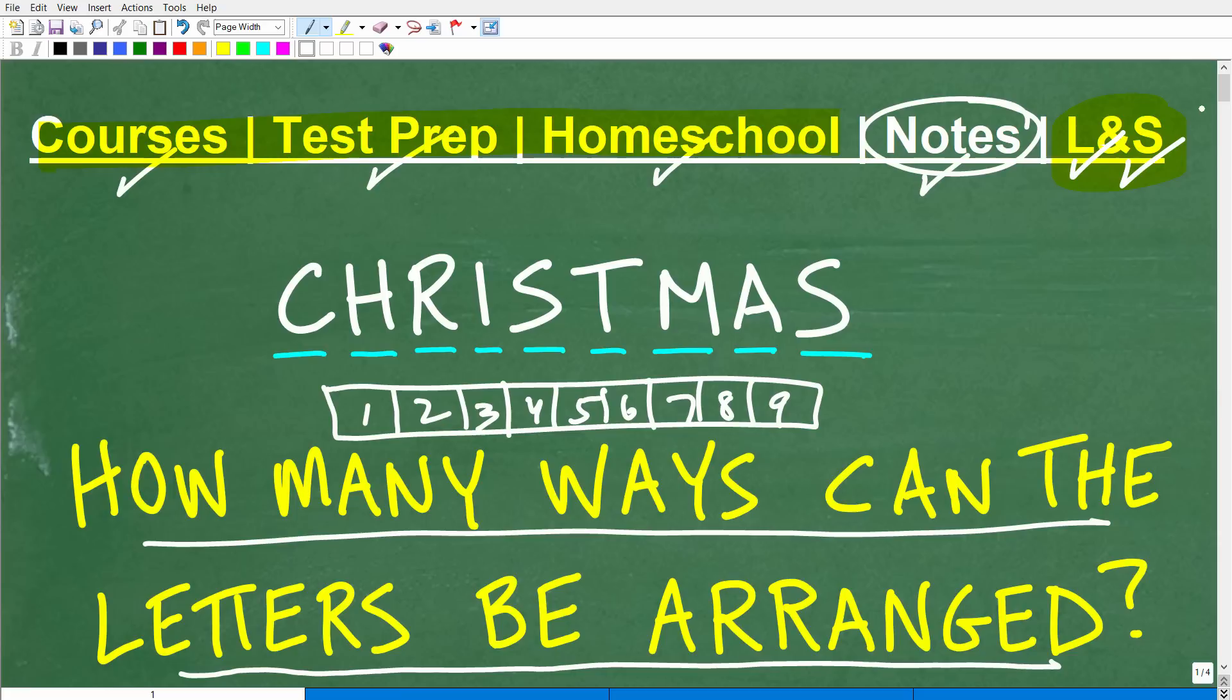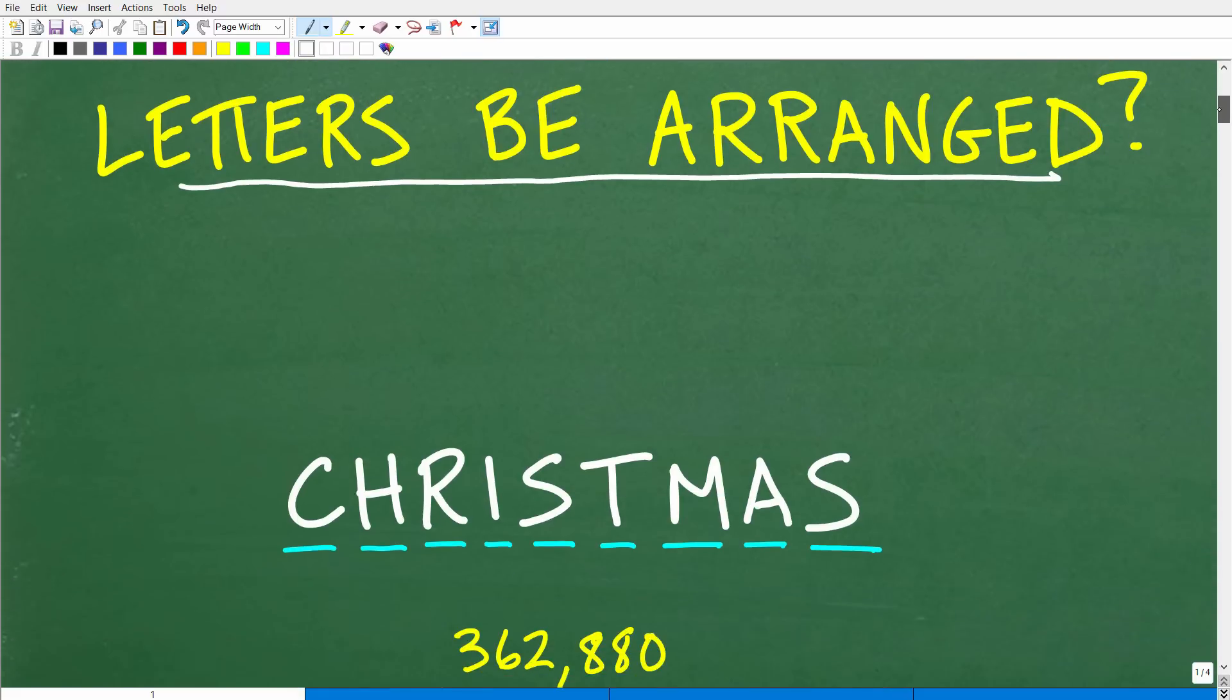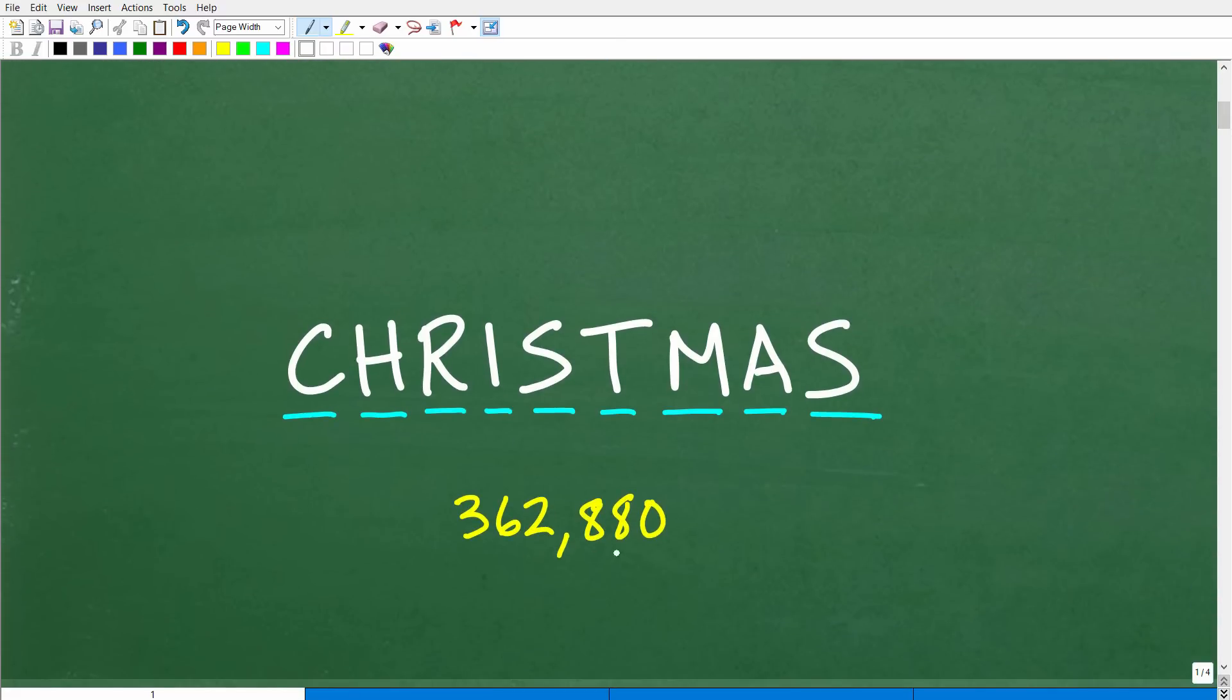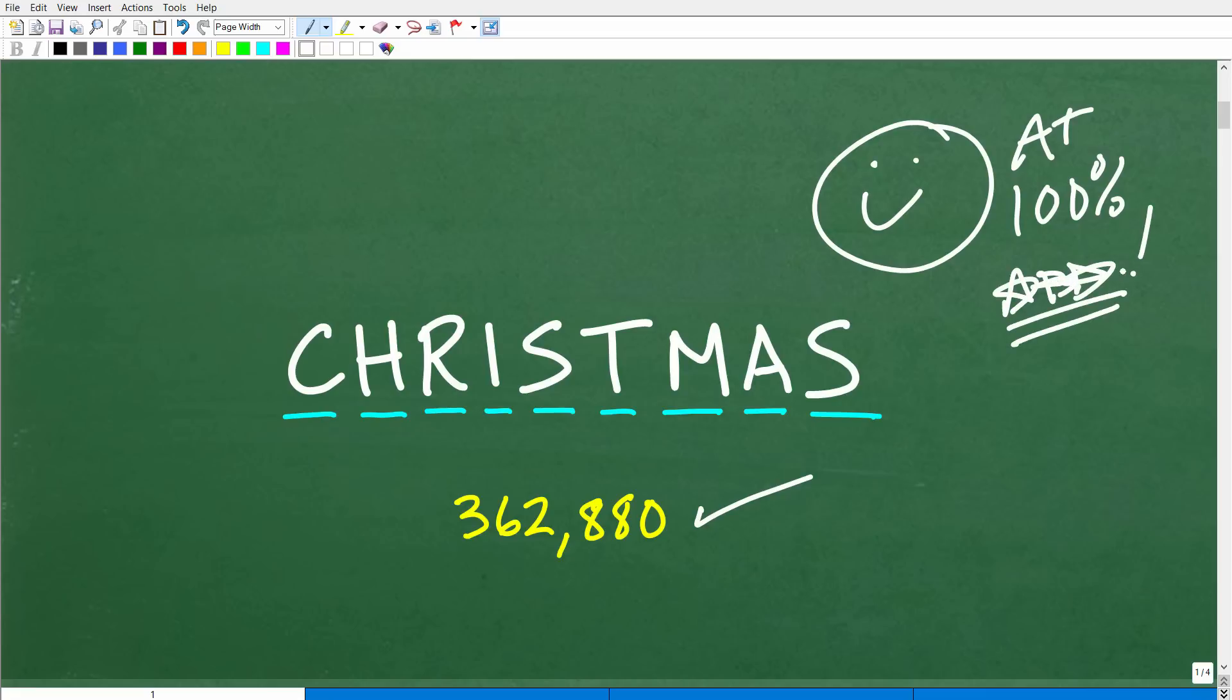Okay, so let's get into the holiday spirit in terms of mathematics and figure this question out. And let me go ahead and show you the answer. So how many different ways can the letters of the word Christmas be arranged? Well, here is the answer: 362,880. So if you've figured this out, let me go ahead and give you a nice little Christmas day happy face and A plus 100% and a few stars so you can have an extra, extra special Christmas day. So nice job.